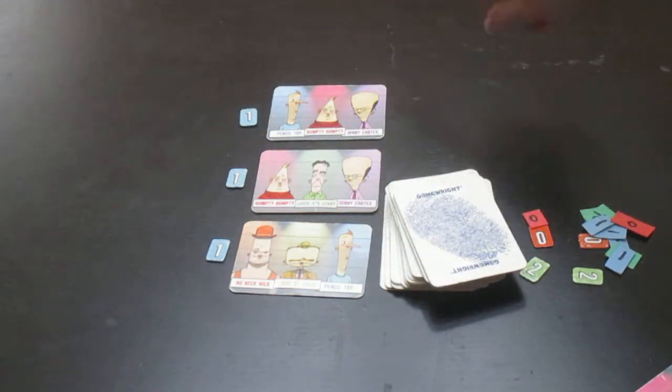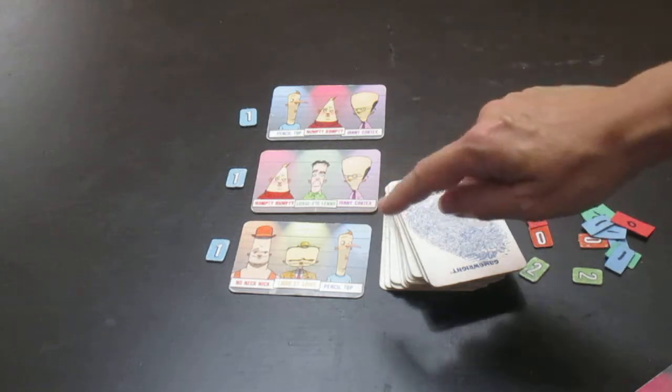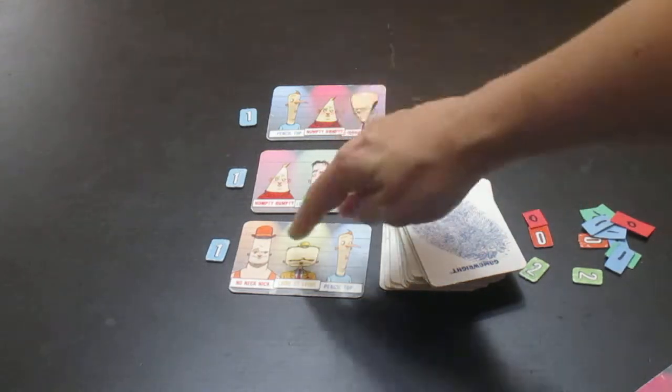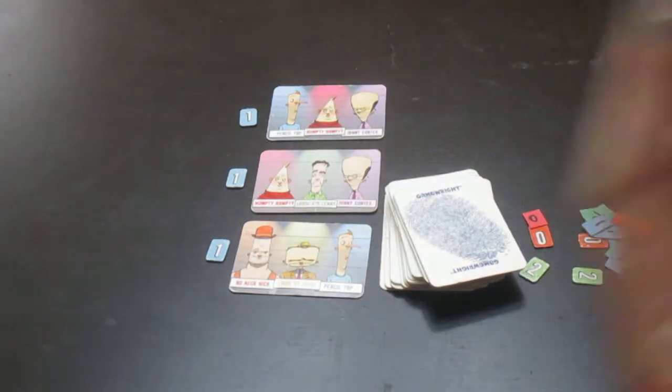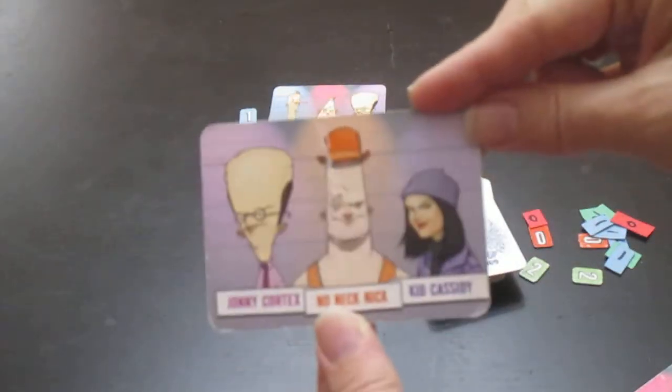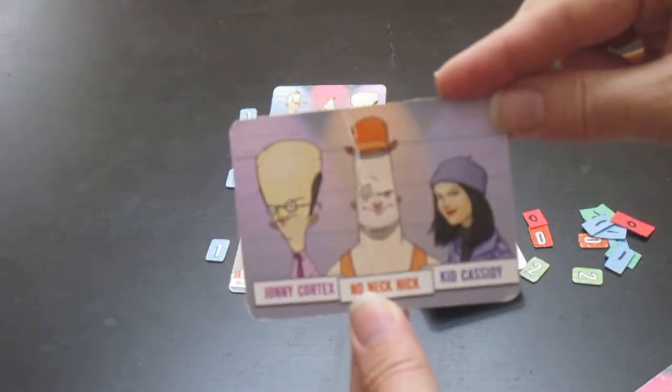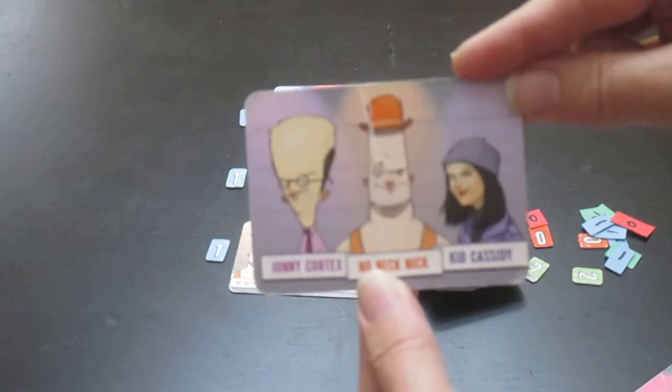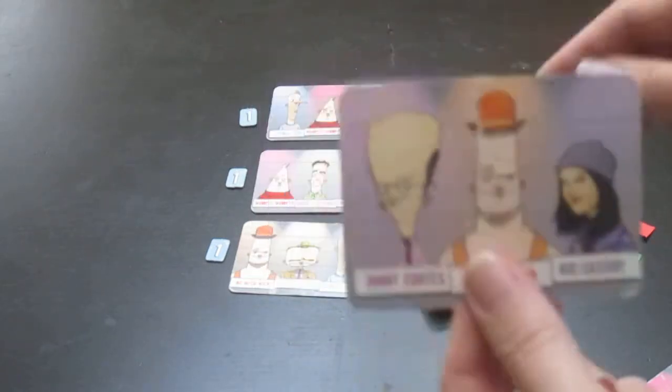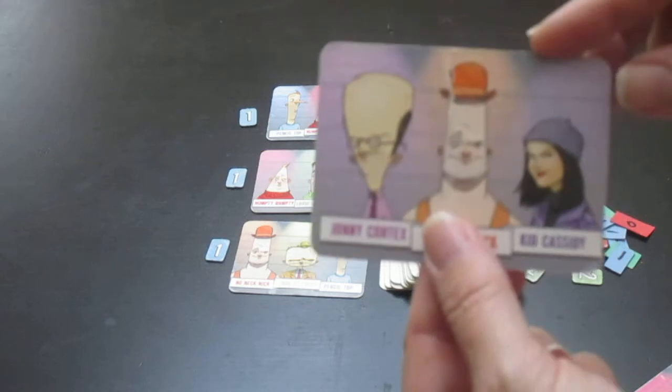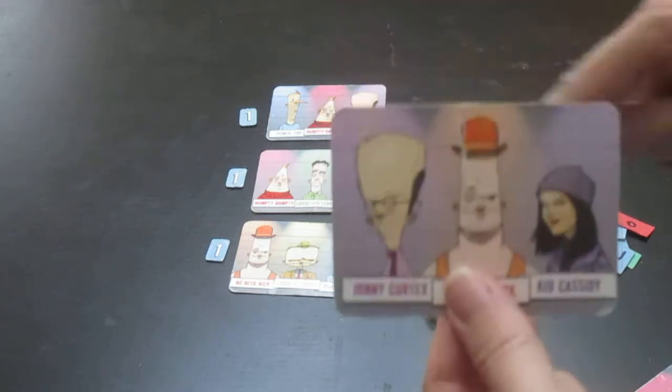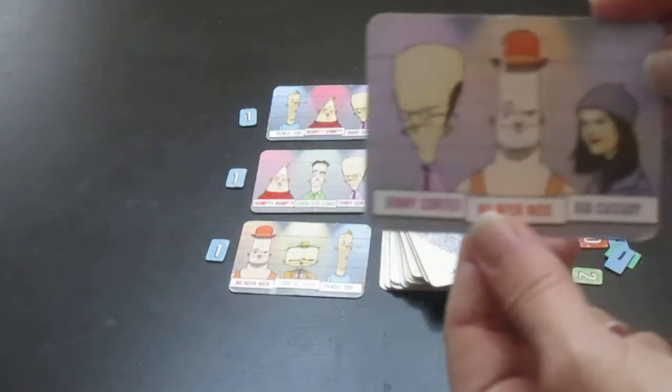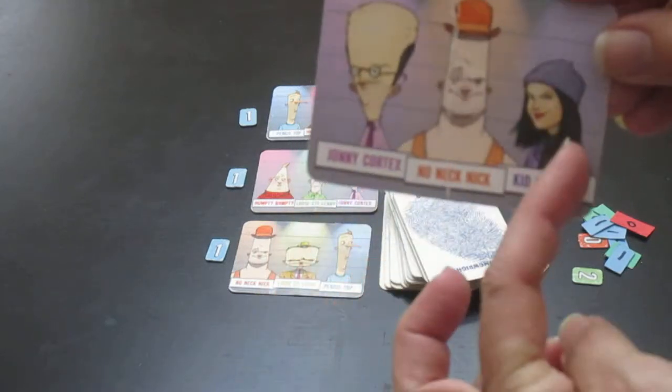So play keeps going until somebody thinks they know, based on what they see here, who are the three characters on this card. If they think they know it, then they say, oh I know it, and then they guess. If they guess wrong, they are out, and play keeps going until somebody can guess who the three characters are.